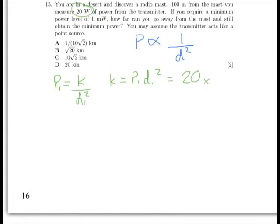And D1 was 100, so that's 100 squared, which will give you 200,000, or 2 times 10 to the power of 5. And that is our constant.